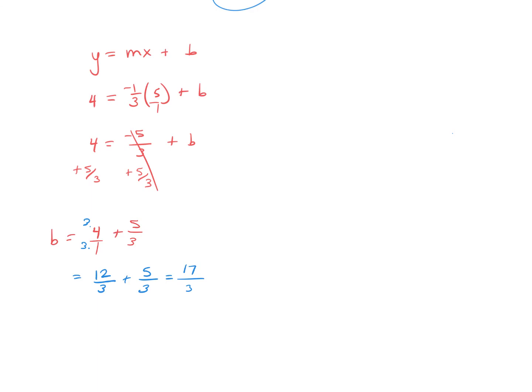Now we have our y-intercept. So our equation, plug into y equals mx plus b. y equals, the slope is negative 1 third x, and our y-intercept is positive 17 thirds.